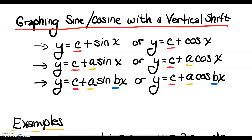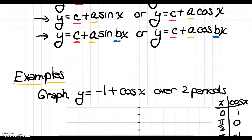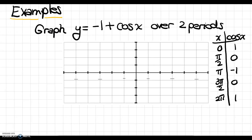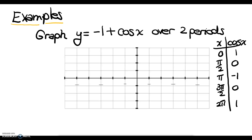Let's get started on our examples. We're going to identify all of our vertical shifts, phase shifts, and amplitudes. In this example, we have y equals negative 1 plus cosine of x. I'm going to circle my vertical shift and mark pointers for my amplitude and period change values.